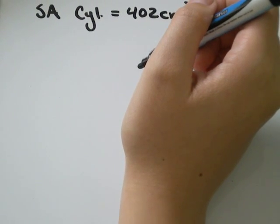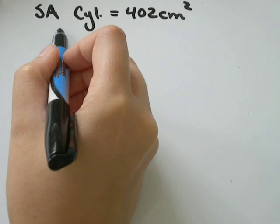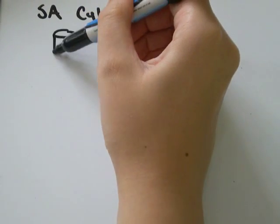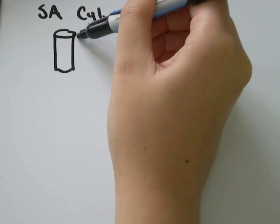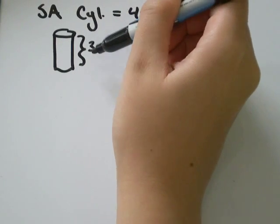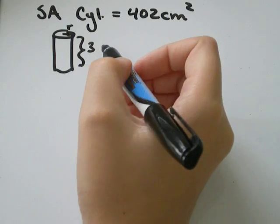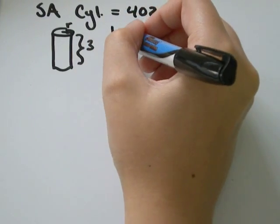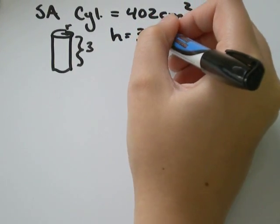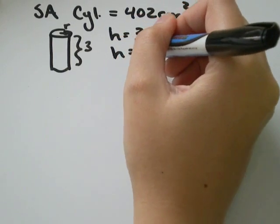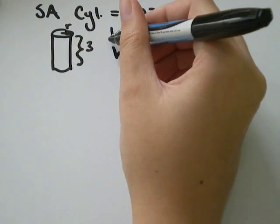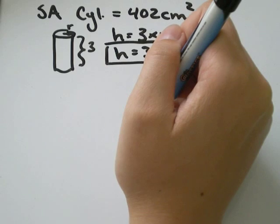We know that the height is 3 times the radius. So we've got sort of like a can of pop or something where the height is 3 times the radius. So another way of representing the height would be 3 times r, 3r. And you'll see how this is important in a little bit.